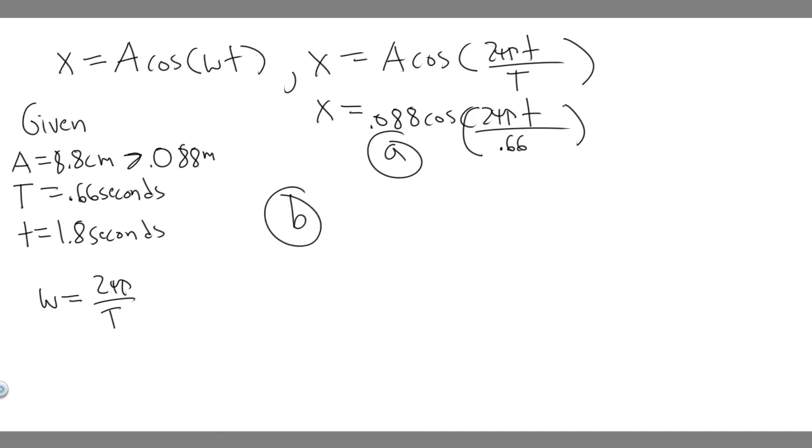So B wants us to actually solve for when its displacement is T equals 1.8 seconds. This is just relatively easy. All we have to do is just plug it in. So x, which is the displacement, is equal to 0.088 times the cosine of 2 pi times the time, which is 1.8, over 0.66. So just go ahead and plug it in your calculator: 0.088 times the cosine of 2 times pi times 1.8 divided by 0.66.